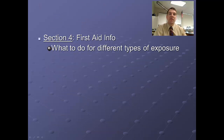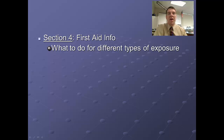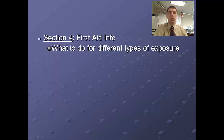Section four tells you what to do if someone has an inadvertent exposure — whether it's you or somebody else. Depending on the type of exposure, it gives different instructions. For instance, when you ingest something, sometimes you want to induce vomiting, sometimes you don't. So it's important to consult this section if there is an accidental exposure.